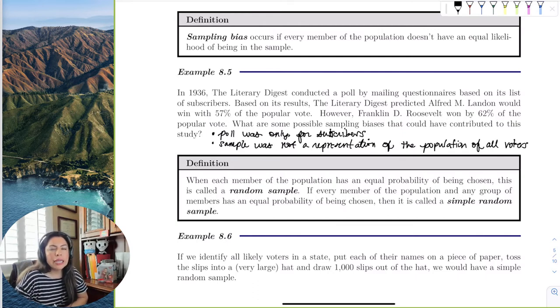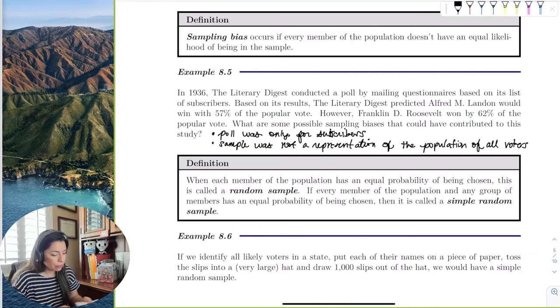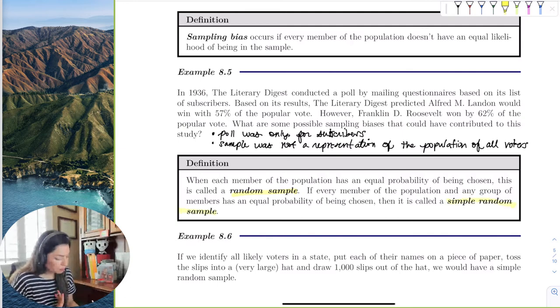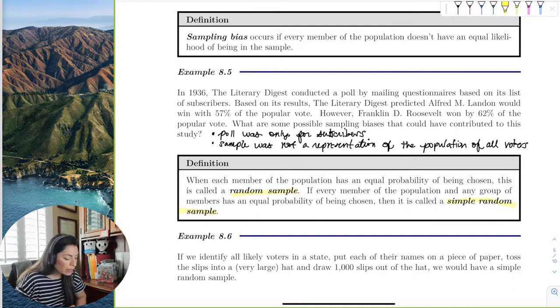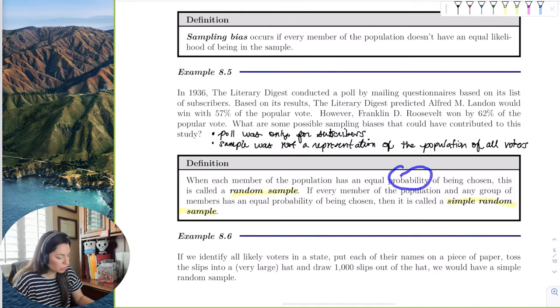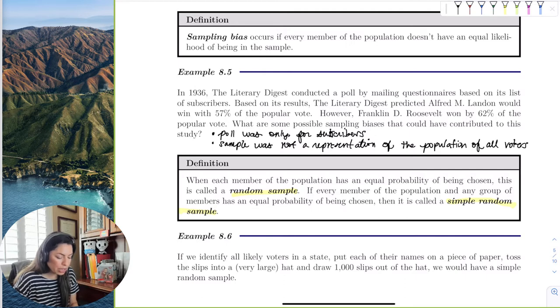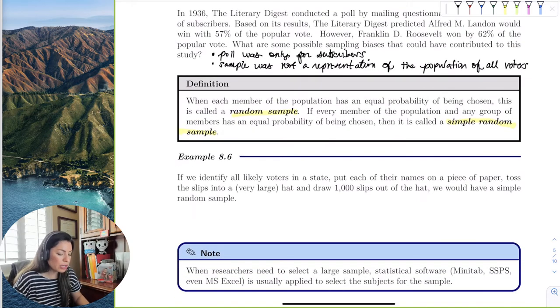Okay, so how do we avoid sample bias? Well, we first need to make sure our sampling is random, and even more so that it's a simple random sample. So a random sample is just when each member of the population has an equal probability being chosen. And then if every member of the population and any group of members, then it's a simple random sample. Essentially, we just like random sampling.